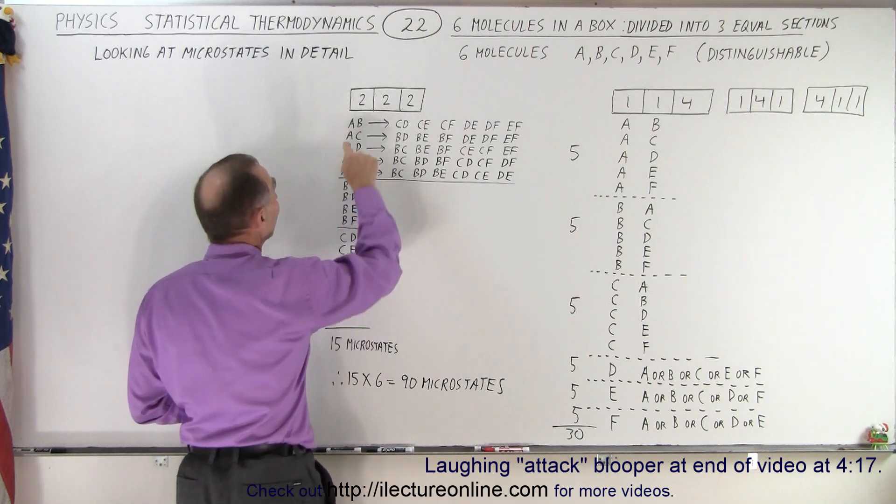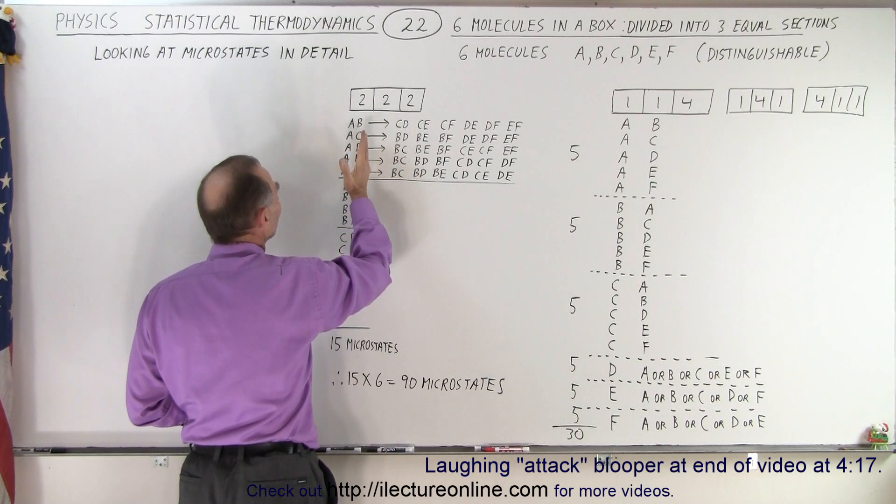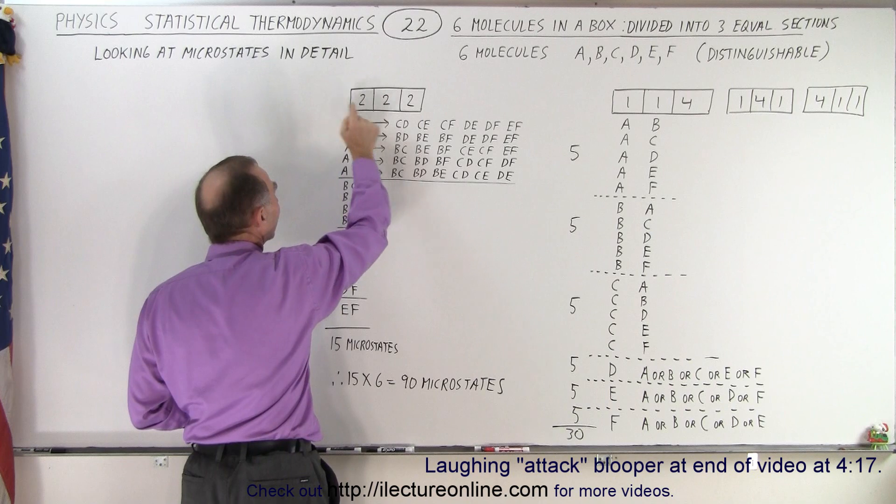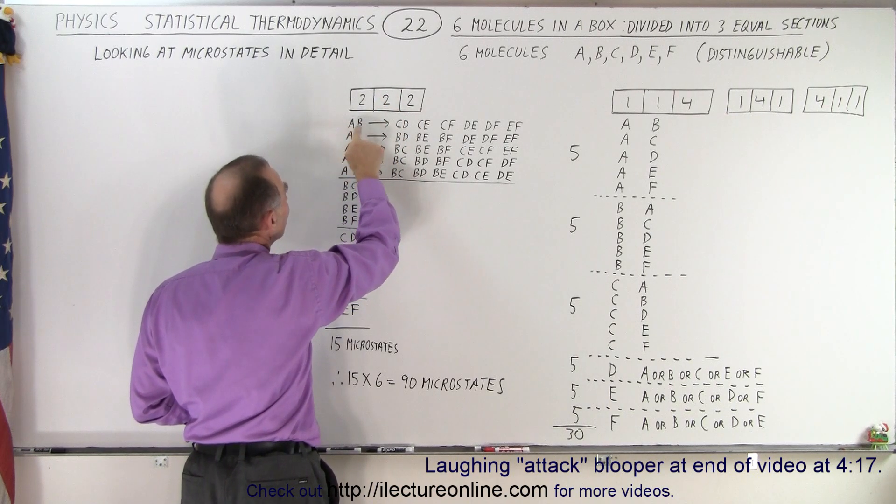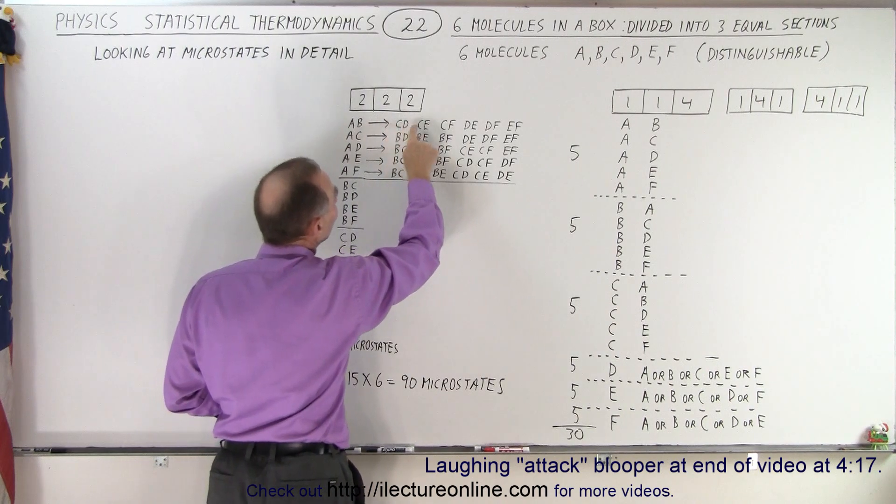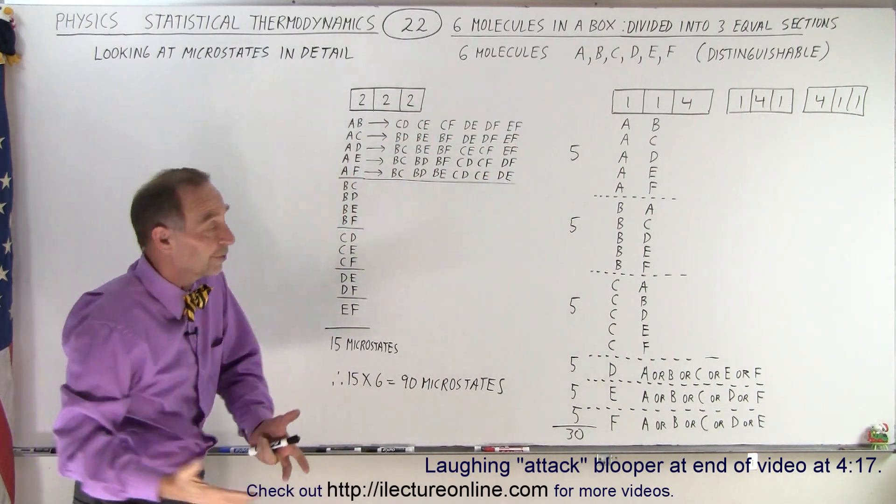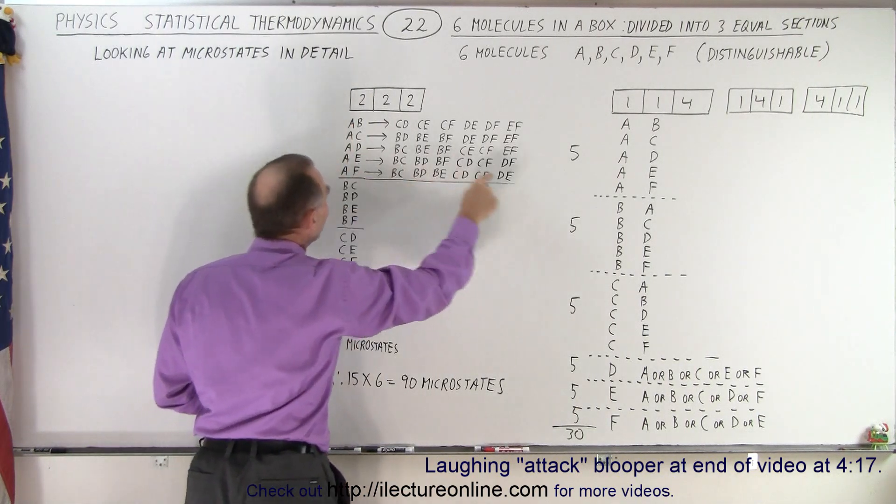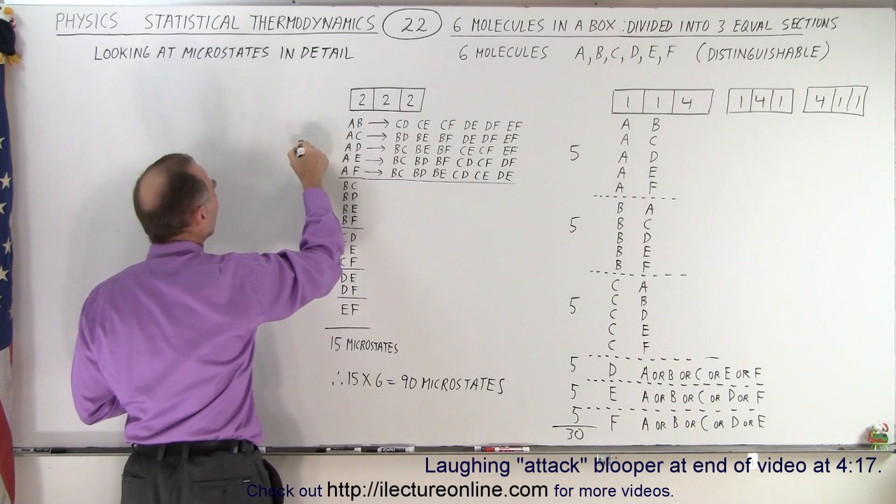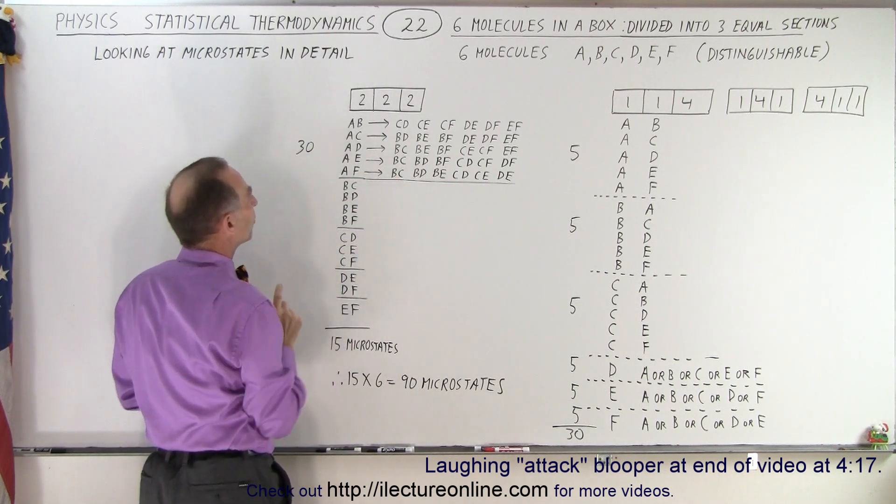Notice that if we take A, B, A, C, A, D, A, E, or A, F for the two molecules on the left side, what is the possibility for the middle box? And you can see that if we have A, B on the left side we have these six combinations for the middle box and of course the right box would take whatever is left. So you can see that is five times six or a total of thirty microstates in this case. Is that correct? Yes, thirty microstates.